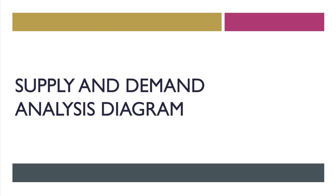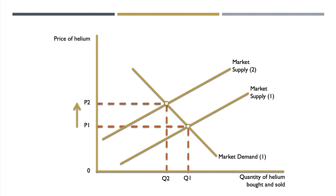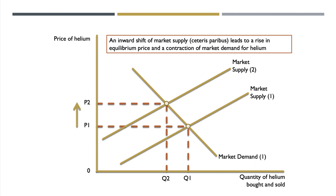Let's build this into an introductory level supply and demand diagram. Consider an initial equilibrium price p1. A fall in market supply causes the market supply curve to shift from MS1 to MS2. Other things being equal, that drives the equilibrium price of helium up from p1 to p2. An inward shift of supply, ceteris paribus, leads to a rise in equilibrium price and a contraction of market demand for helium as it becomes more expensive.